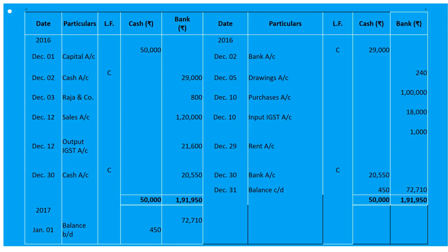On December 3rd, received cheque from Raja and Company with discount allowed. Entry: 'To Raja and Company Account' and the amount goes under the bank column. The discount allowed entry will be done in journal proper under working notes.